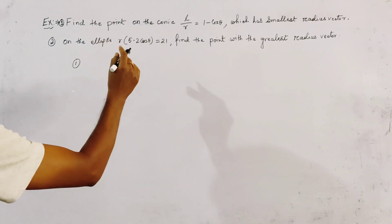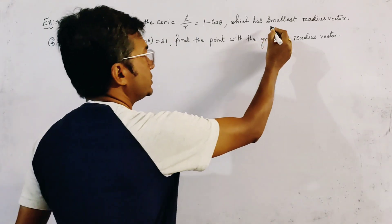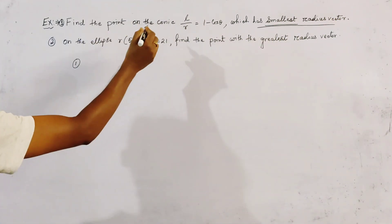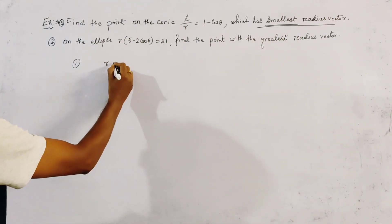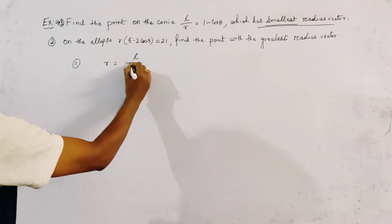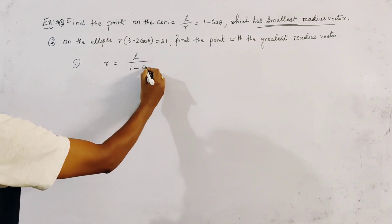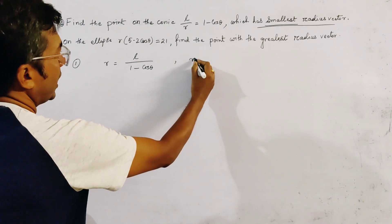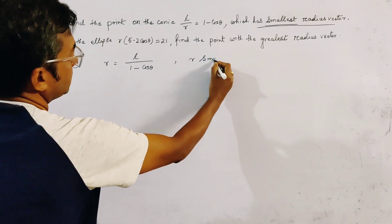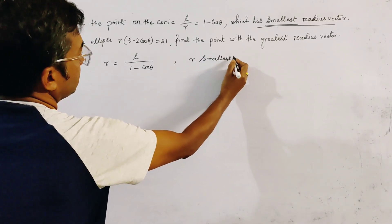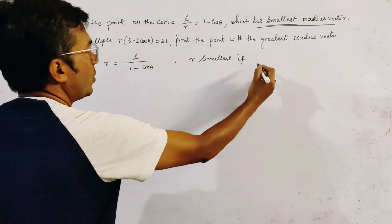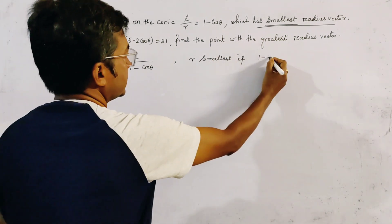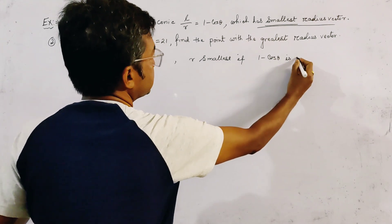We have to find the point at which the radius vector is smallest. We find first the radius vector R, which is equal to L/(1 - cosθ). R is smallest if 1 - cosθ is greatest.